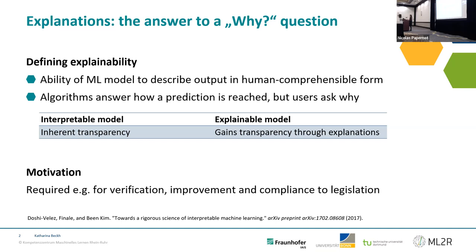We make the distinction between interpretability and explainability, where interpretability is an inherent transparency of a model, such as a decision tree, which is from its model architecture already interpretable. I want to make the point that not necessarily all decision trees are completely interpretable, depending on the size of them. Expandability, on the other hand, is in the sense that you gain transparency through explanations.